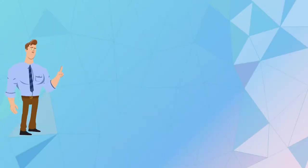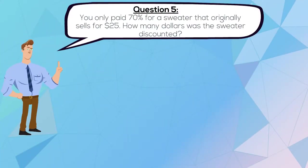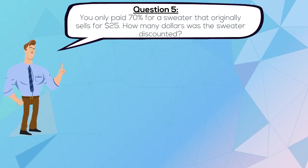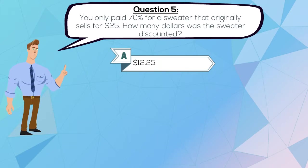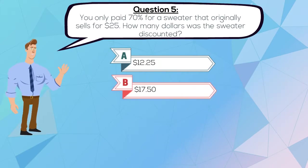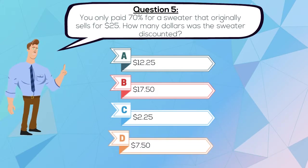Question 5. You only paid 70% for a sweater that originally sells for $25. How many dollars was the sweater discounted? A. $12.25, B. $17.50, C. $2.25, or D. $7.50.